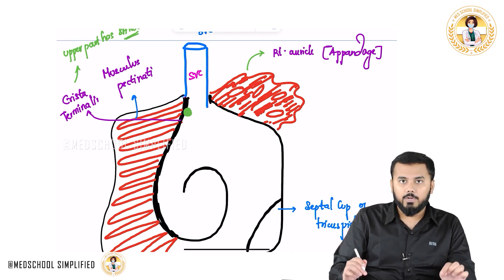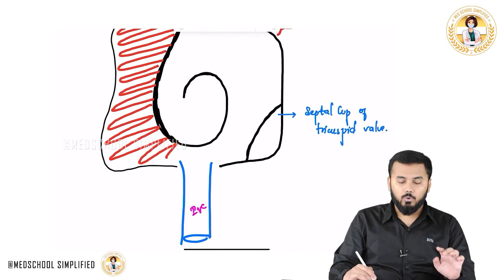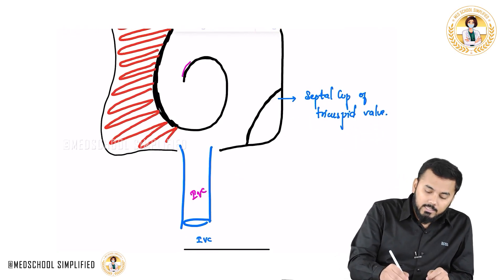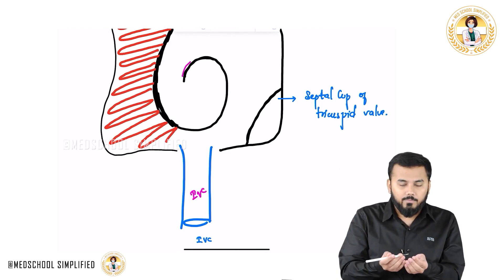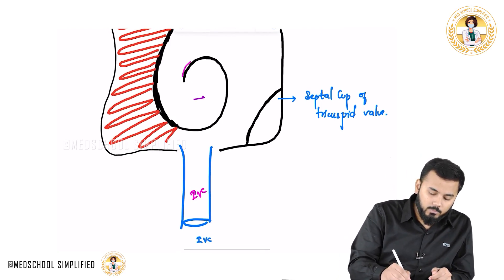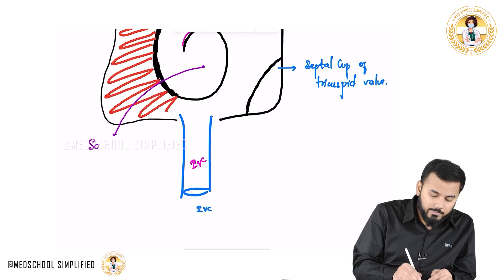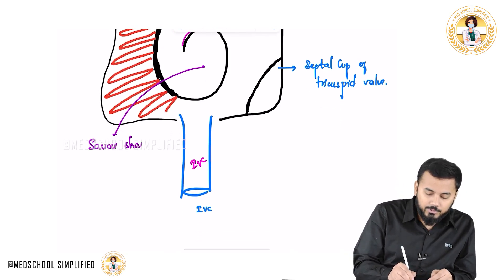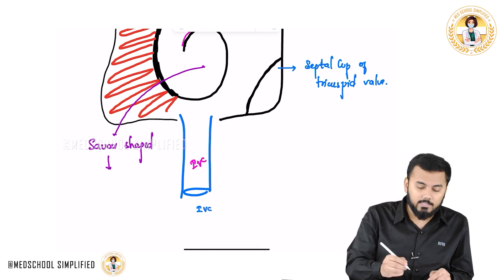These are some of the important things you need to know. You can see this oval round saucer-shaped thing over here. This saucer-shaped structure is called as Fossa Ovalis. I hope all of you know what Fossa Ovalis is.